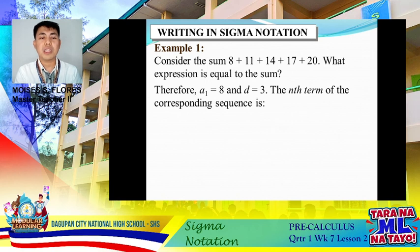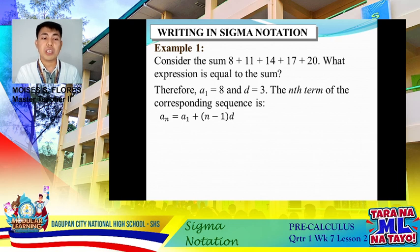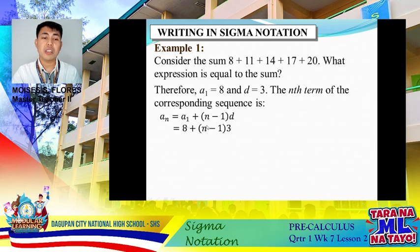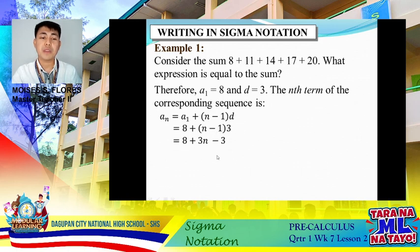We will use the formula aₙ = a₁ + (n−1)d. Substituting a₁ = 8 and d = 3, we distribute 3 over the binomial, giving us 8 + 3n − 3. Simplifying further, we get 3n + 5. This is now our nth term.